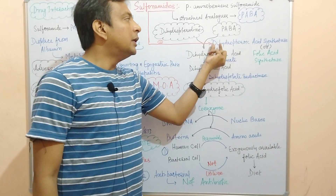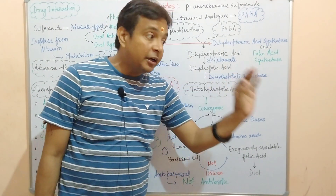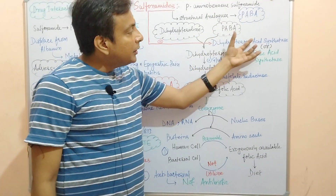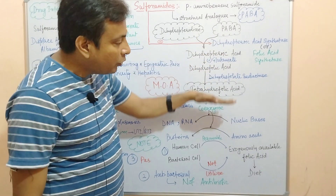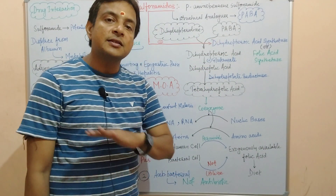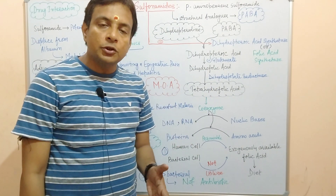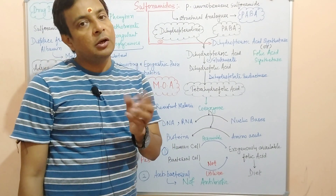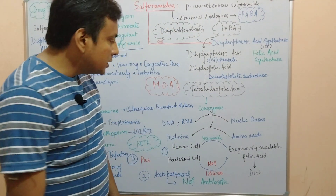Sulfonamides, being structural analogs of para-aminobenzoic acid, competitively inhibit dihydropteroic acid synthetase, also called folic acid synthetase. When this enzyme is competitively inhibited, no further steps continue and folic acid is not synthesized. Without folic acid, bacteria cannot carry out the growth and replication process. This is the mechanism of action of sulfonamides.